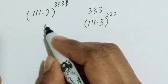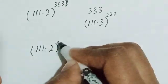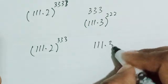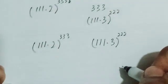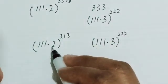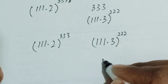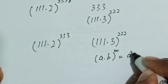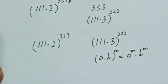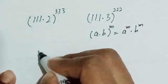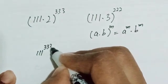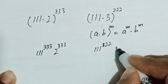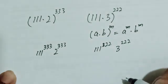So I will write this as 111 times 2, to the power 333, compared with 111 times 3, to the power 222. Next, I'm going to apply the rule that (a · b)^m = a^m · b^m. Applying this: 111^333 · 2^333 compared with 111^222 · 3^222.